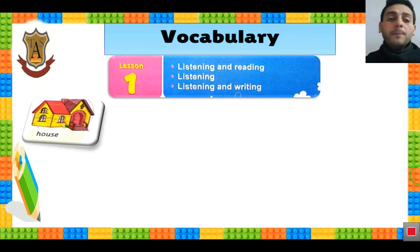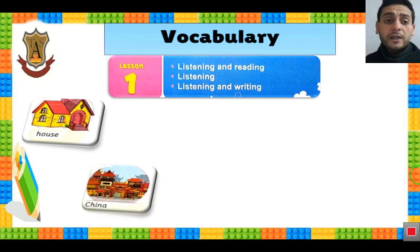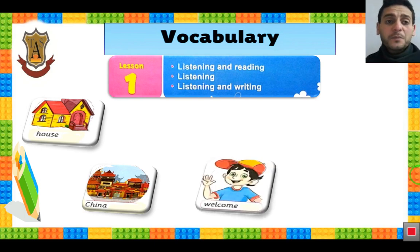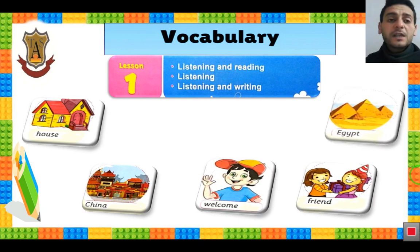Picture number 1: House. I live in a big house. My house is always clean. Number 2: China. China is a big country. I live in China. I'm a Chinese. Welcome, welcome to Egypt. Number 4: Friend. He is my best friend. The last one: Egypt. I live in Egypt. I am Egyptian.